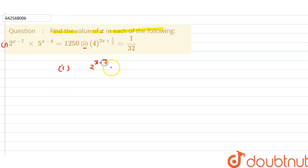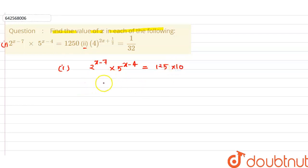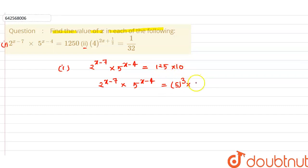The first part is: 2 raised to the power (x minus 7) multiplied by 5 raised to the power (x minus 4) equals 1250. We can write 1250 as 125 into 10. So it becomes 2^(x-7) into 5^(x-4) equals 125 into 10.